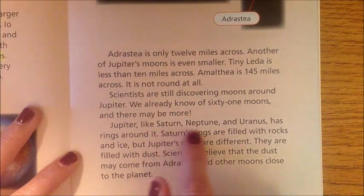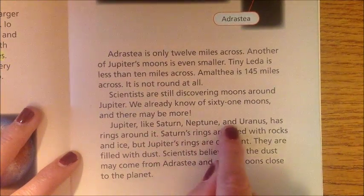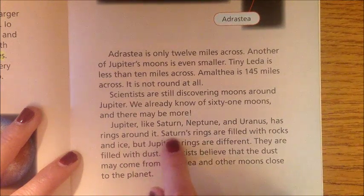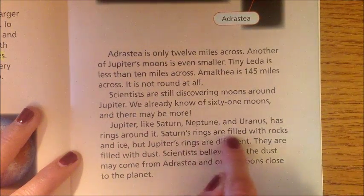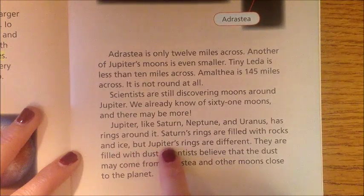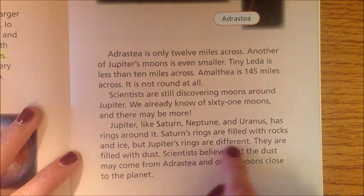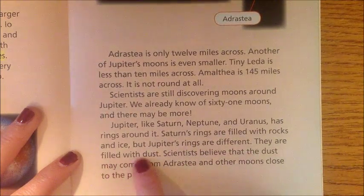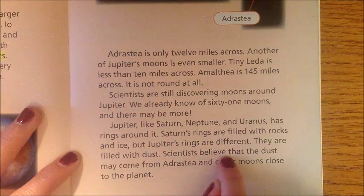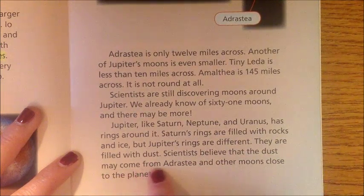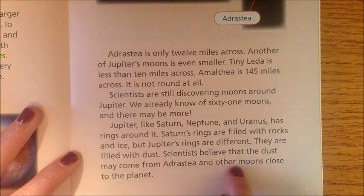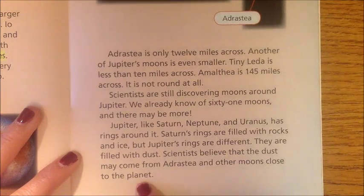Jupiter, like Saturn, Neptune, and Uranus, has rings around it. Saturn's rings are filled with rocks and ice, but Jupiter's rings are different — they are filled with dust. Scientists believe that the dust may come from Adraste and other moons close to the planet.